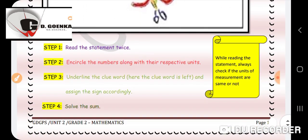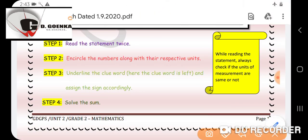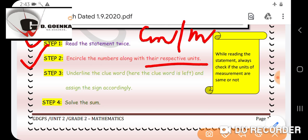Now we will keep in mind some steps that we are supposed to follow while solving our statement sum. Step 1: read the statement twice. Step 2: encircle the numbers along with their respective units, that means centimeter or meter. We have to encircle the number along with the unit.